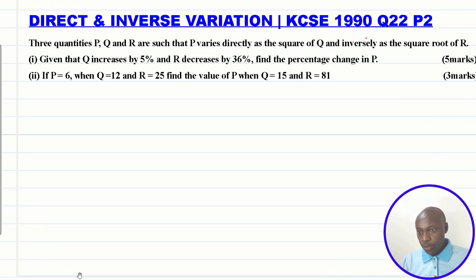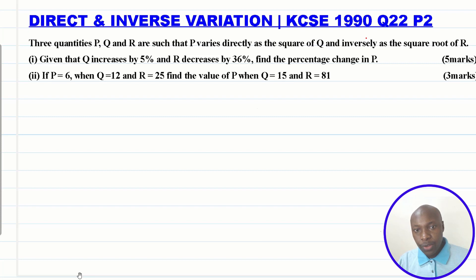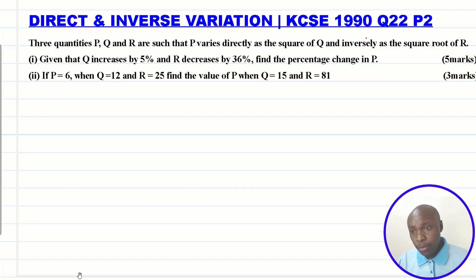Direct and inverse variation. Three quantities p, q, and r are such that p varies directly as the square of q and inversely as the square root of r. Part one: given that q increases by five percent and r decreases by 36 percent, find the percentage change in p. Part two: if p equals 6 when q equals 12 and r equals 25, find the value of p when q equals 15 and r equals 81.